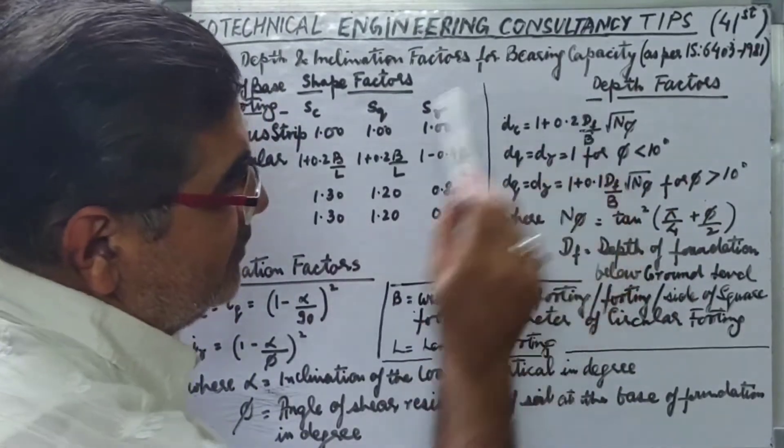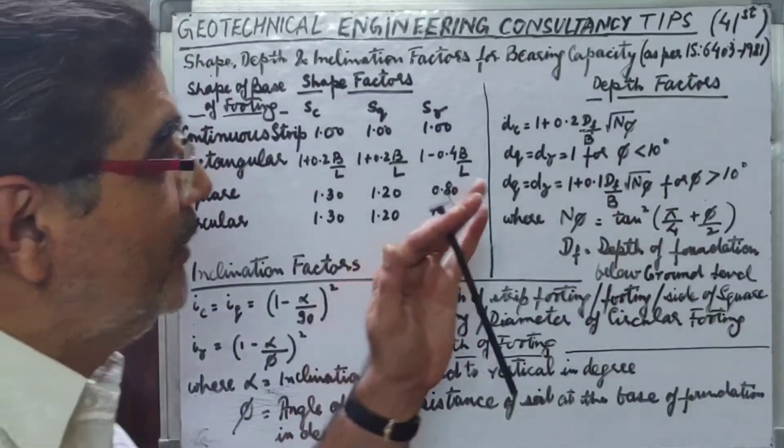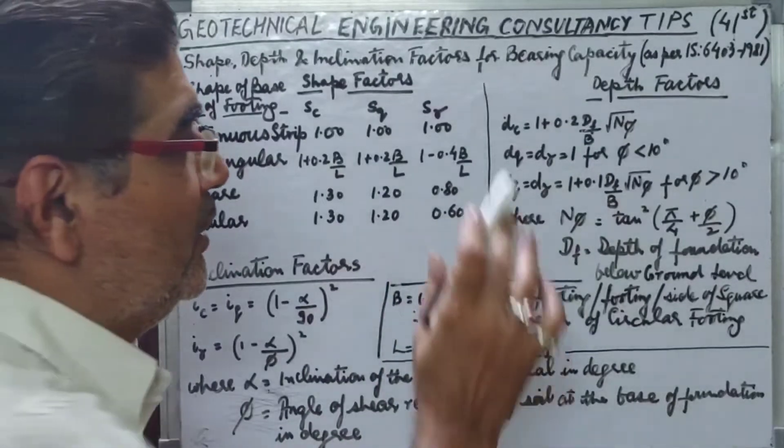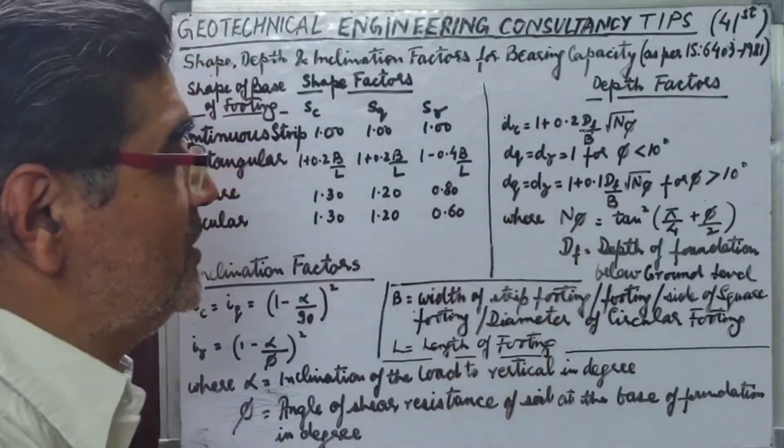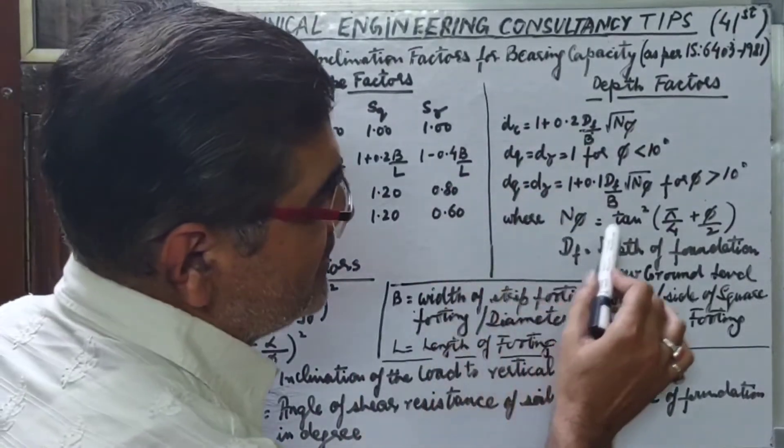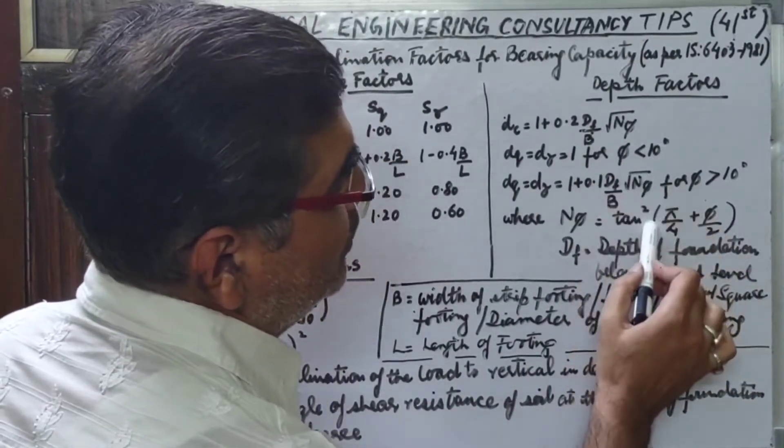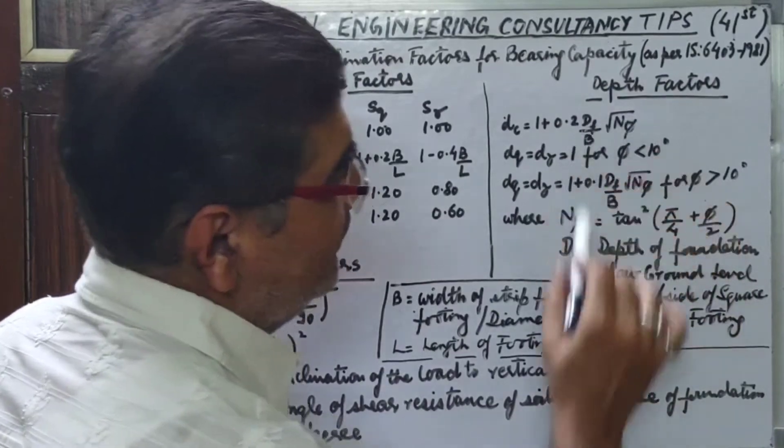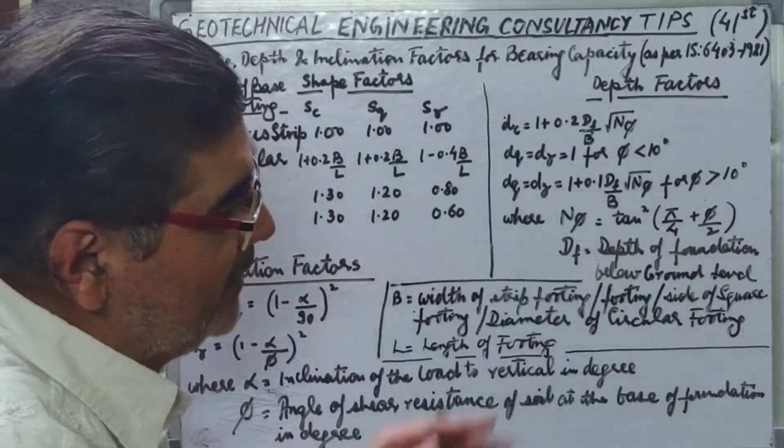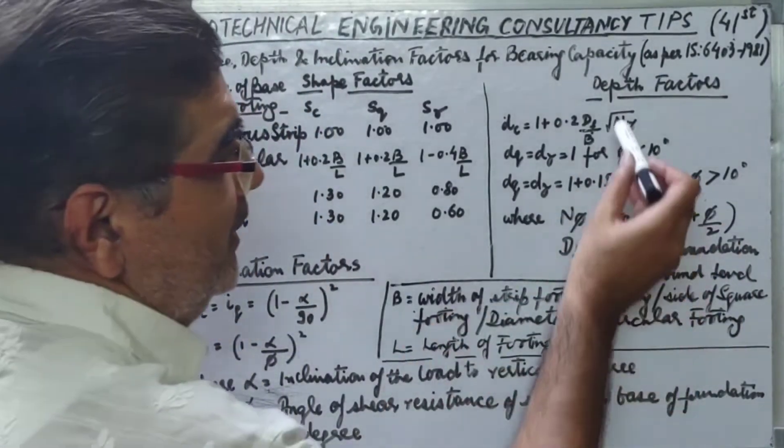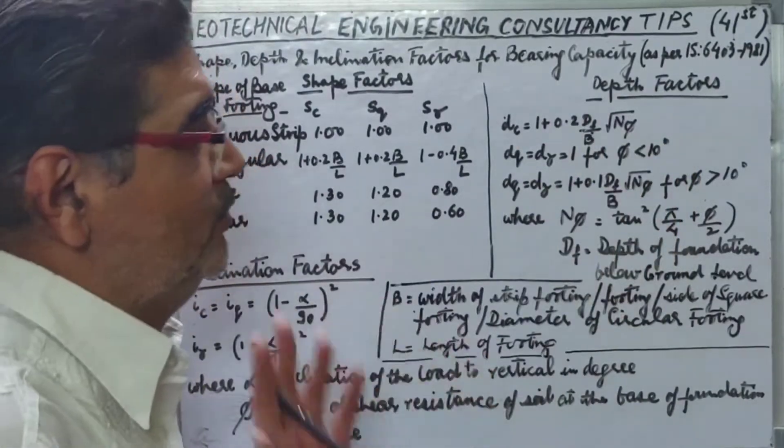Where Df is the depth of foundation from the natural ground level of the footing foundation proposed. N phi is tan square of 45 plus phi by 2. So when you put this value here, this will be tan of 45 plus phi by 2 when you will be taking it as an entire root of this.